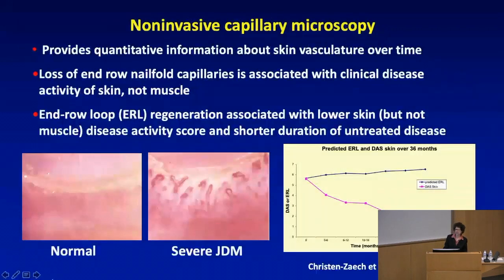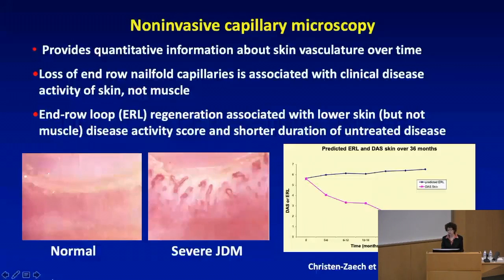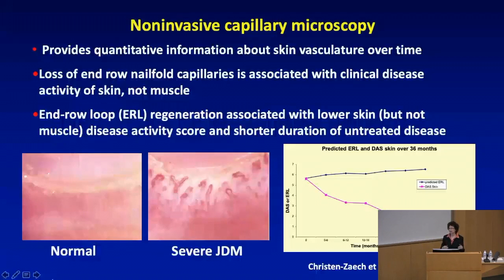Regarding noninvasive capillary microscopy — some older data showed the relationship between predicted nail fold loops and disease activity score for skin over 36 months. This is a wonderful way to look at and predict skin, but not quite as much muscle disease activity. Shorter duration of untreated disease really helps with improving this feature.